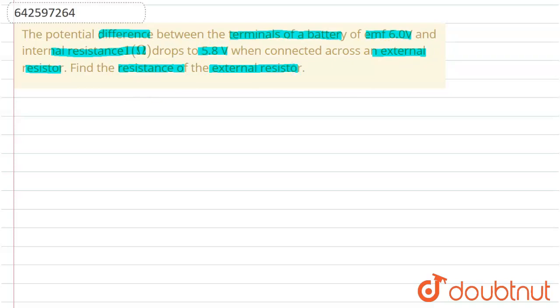So first of all we have to draw a circuit diagram. This is a battery whose internal resistance is r, whose emf is E, and it is connected to an external resistance, say capital R.